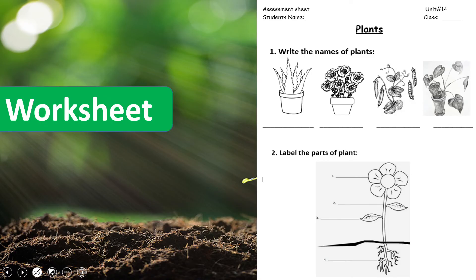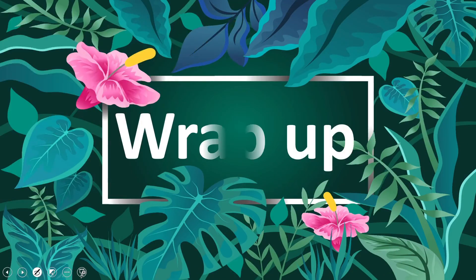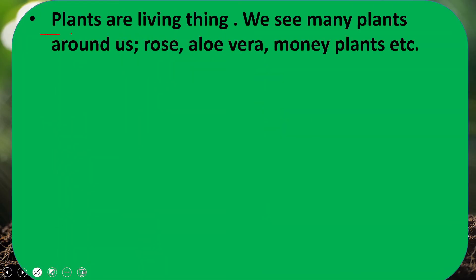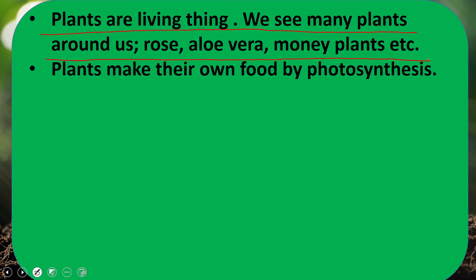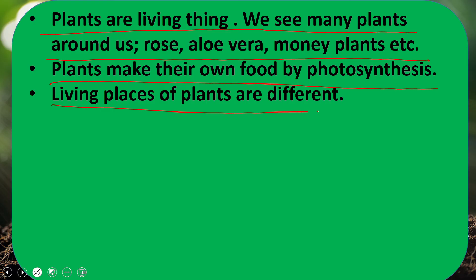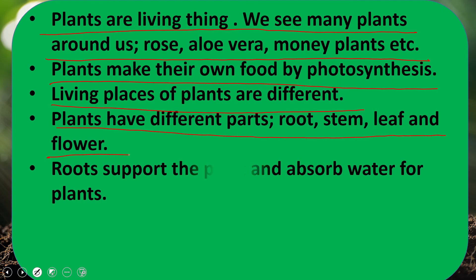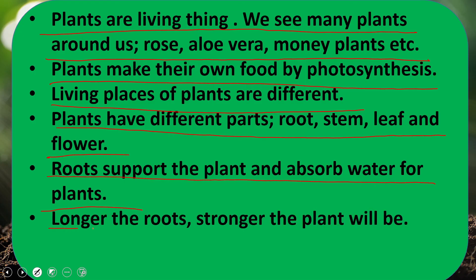Now is the time for worksheet — download this worksheet from the description box below this video, or you can get it in print form from your teacher. Students will write down their name and class and then complete the worksheet. In today's lecture we have learned that plants are living things. We see many plants around us — rose, aloe vera, money plant. Plants make their own food by photosynthesis. Living places of plants are different.